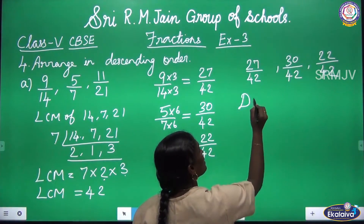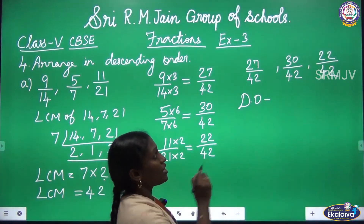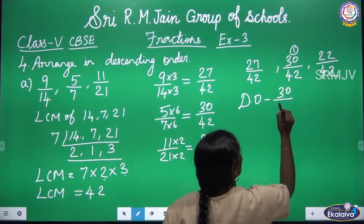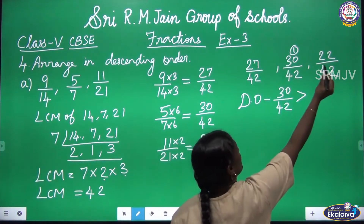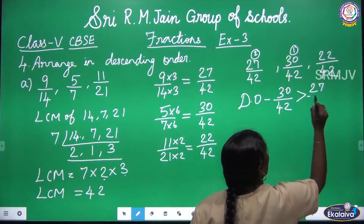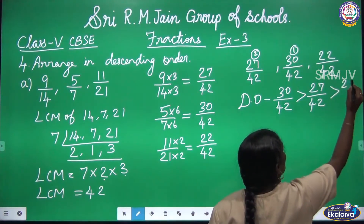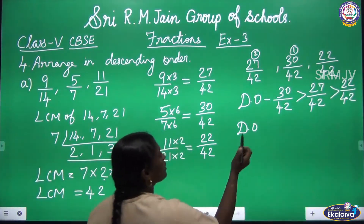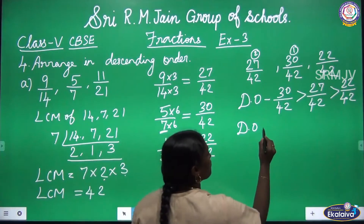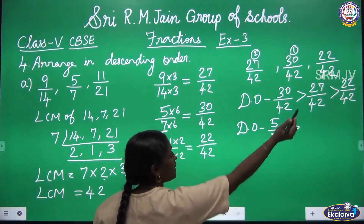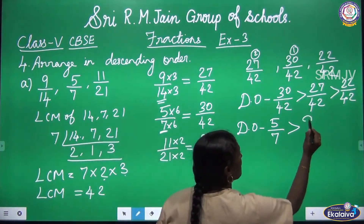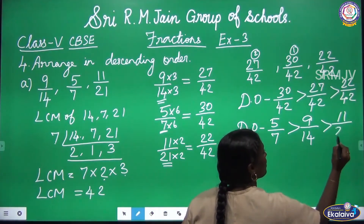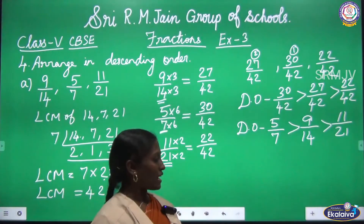Now we arrange the fractions in descending order — greatest to smaller. Comparing the numerators: 30 is the greatest, so 30 by 42 comes first. Then 27 is greater than 22, so 27 by 42 is next, and 22 by 42 is the smallest. Converting back: 30/42 = 5/7, 27/42 = 9/14, 22/42 = 11/21. This is the descending order. Is it clear, children?